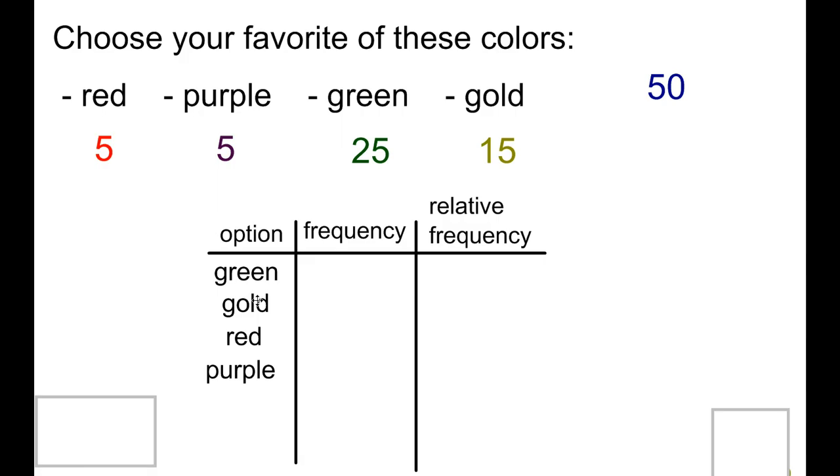I labeled my options in my first column, and then in the second column, I need to put the frequency. The frequency is just the number of people that answer that. So if we had 25 of our 50 people choose green, we're just going to throw a 25 in the frequency column. Same thing for the gold, purple, and red.